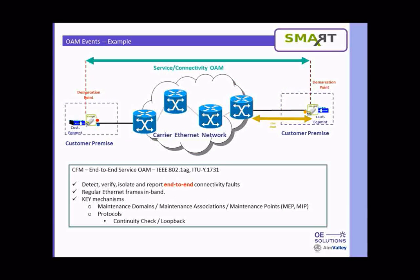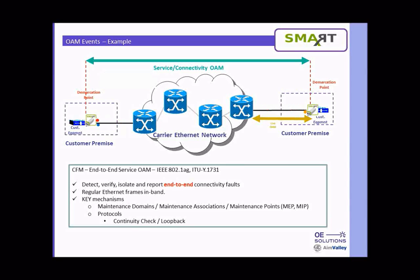This picture shows end-to-end Service OAM. It sends out continuity check signals — CCM signals — to each other. The interval can be set as desired, and it basically checks the heartbeat of the connections. It can also perform a loopback function from one end to the other.